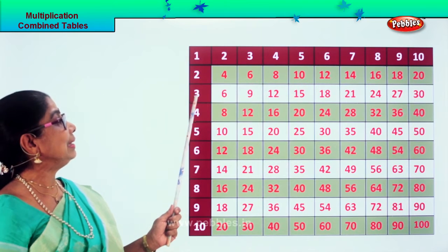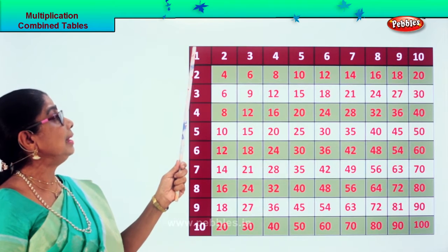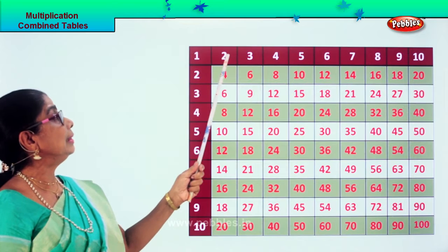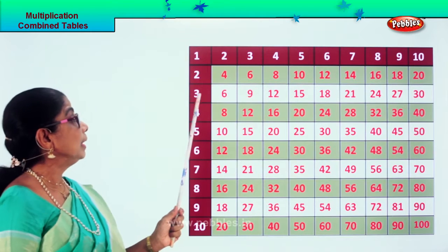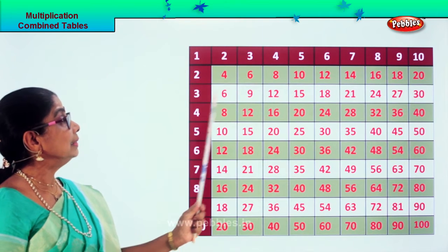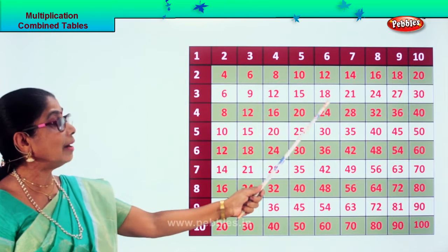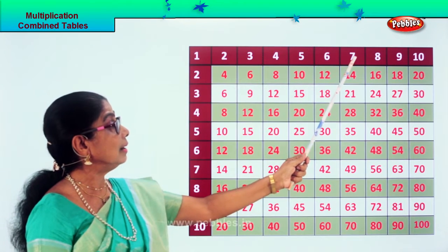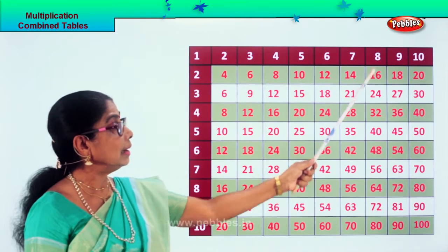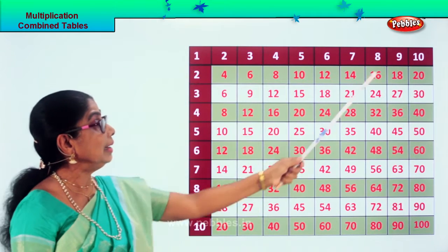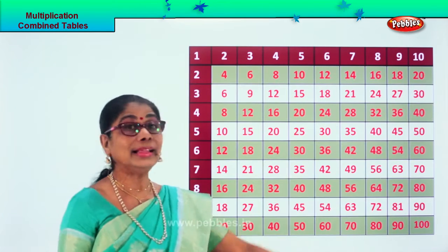Now let's look at the three times table in the chart. Three ones are three. Three twos are six. Three threes are nine. Three fours are twelve. Three fives are fifteen. Three sixes are eighteen. Three sevens are twenty-one. Three eights are twenty-four. Three nines are twenty-seven. Three tens are thirty.